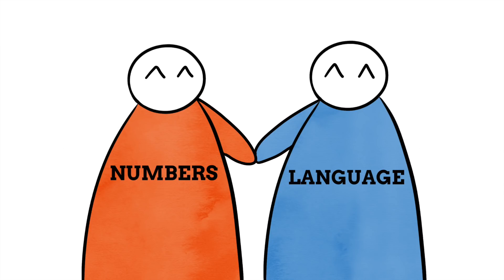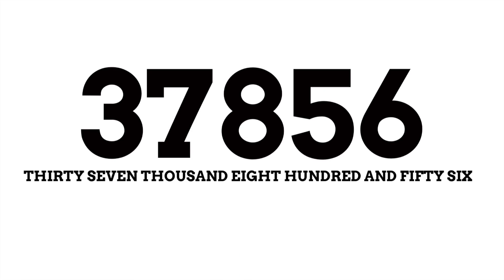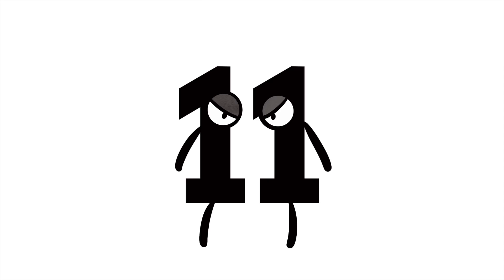Luckily, language and numbers have come together to give us certain conventions, meaning as long as you know the foundations of number names you can look at more or less any number and know exactly how to say its name without having to remember every number name in your head. I can look at a string of numbers and know without even thinking it's 37,856. So let's take a deeper look into these naming conventions, how they work, where the names of these numbers come from, and where these conventions don't come into play.